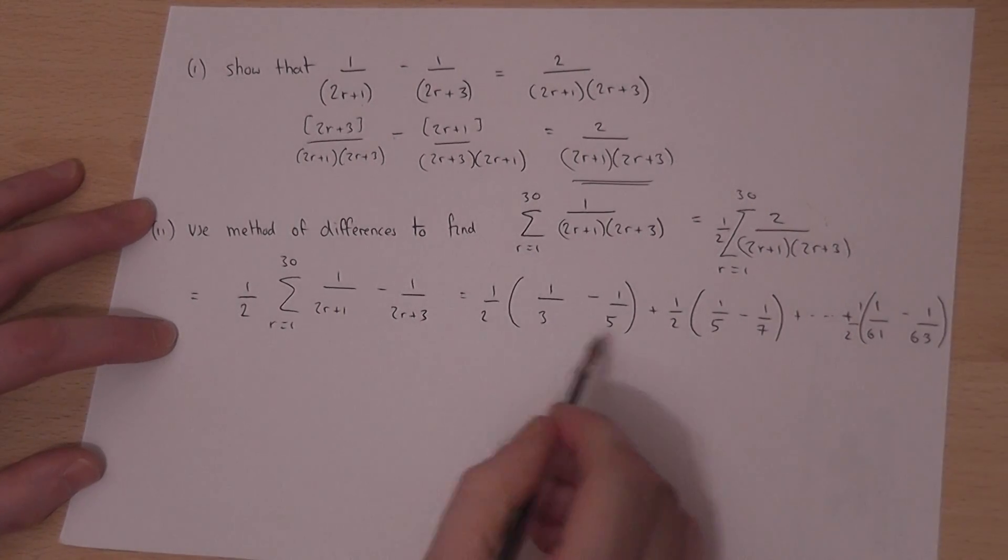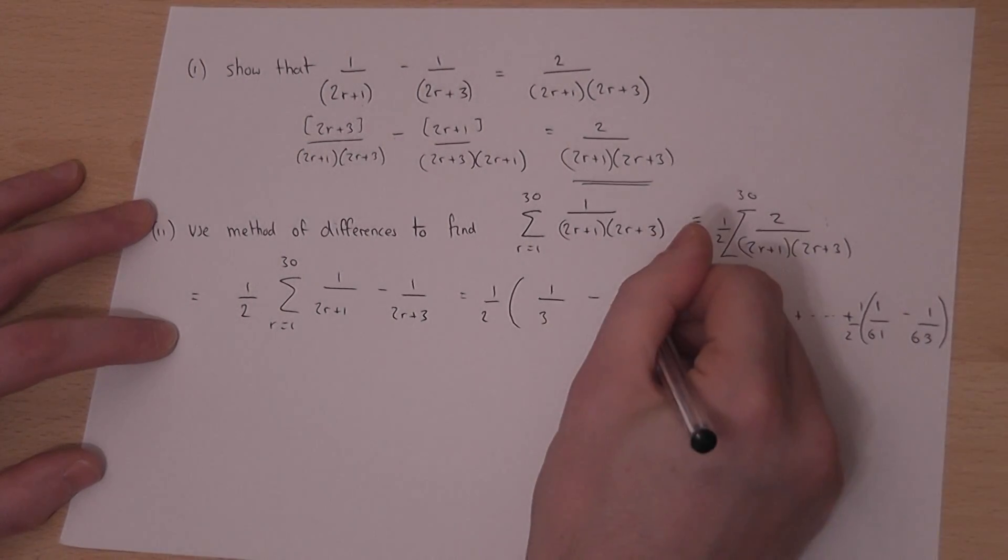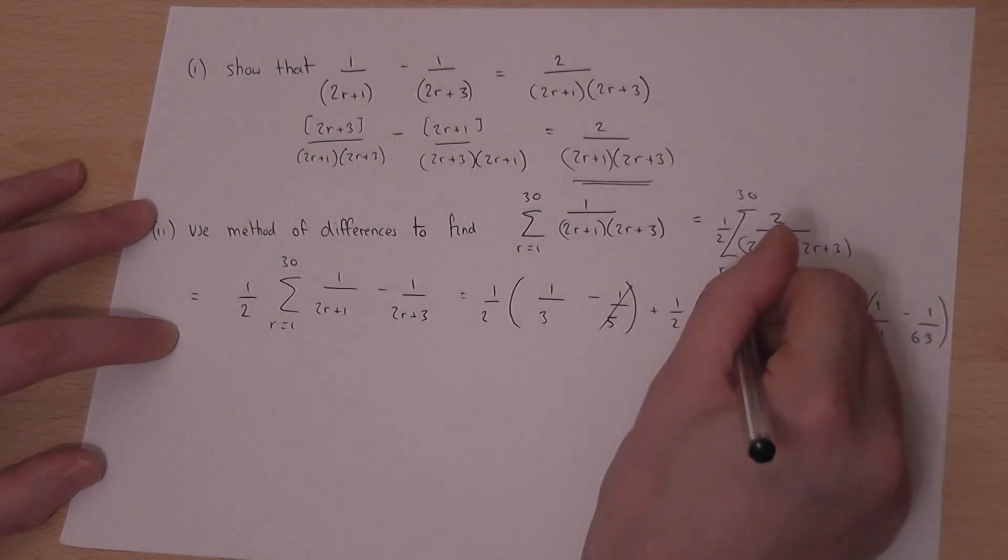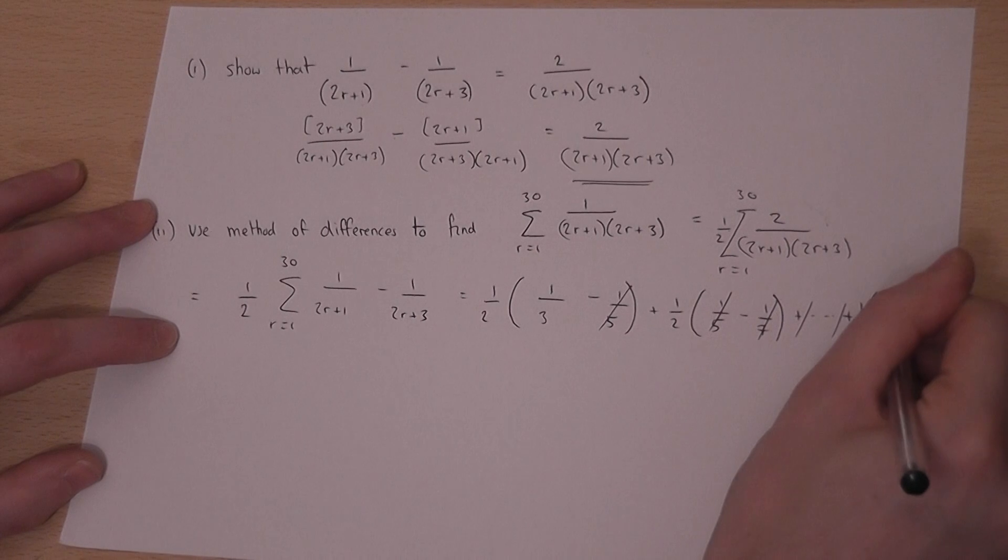Now what's clever is that if we look at each successive bracket, that 1 fifth there which is negative will cancel off with that 1 fifth there which is positive. And it keeps on going but they all cancel off as we go along.